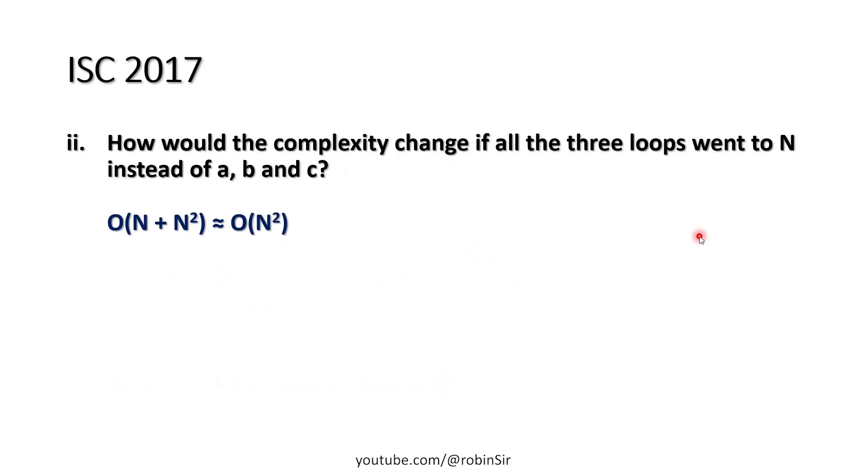In the second part of the question, when they have asked how would the complexity change if all three loops went to N instead of A, B, and C, so instead of A plus B squared, now we have N plus N squared. So N squared is the dominant term. We drop N and that's why the complexity is Big O N squared.